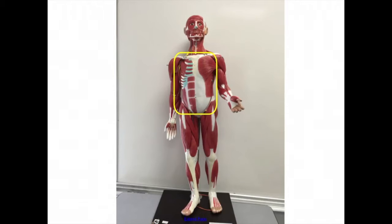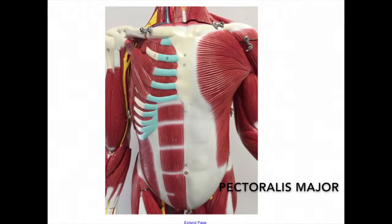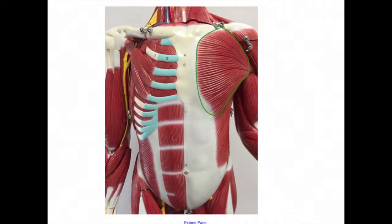This will be the group of muscles we will be focusing on this model. Starting with the pectoralis major located here, the origin is at the clavicle, sternum, and costal cartilage located around here. The insertion is between the greater and lesser tubercles of the humerus located around here. The action is abduction, flexion, and medial rotation of the humerus.